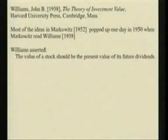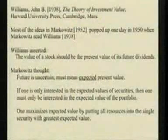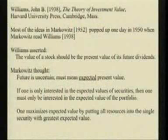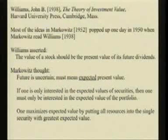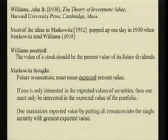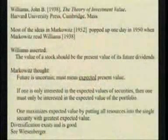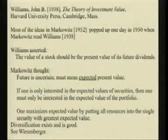Williams asserted that the value of stocks should be the present value of its future dividends. What went through my head was: the future is uncertain, so it must mean the expected value of discounted dividends. If one is only interested in the expected values of securities, then one must be only interested in the expected value of the portfolio — and one maximizes the expected value of the portfolio by putting all one's resources into a single security. Now, I knew that didn't make any sense because security portfolios were diversified. If you looked at Wiesenberger investment companies, you'd see that people pay to have diversified portfolios — and besides, everybody knows you're not supposed to put all your eggs in one basket.